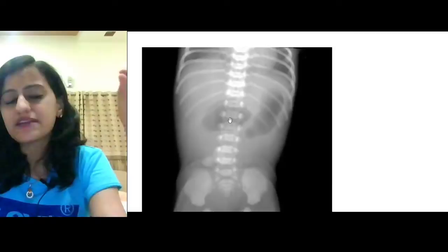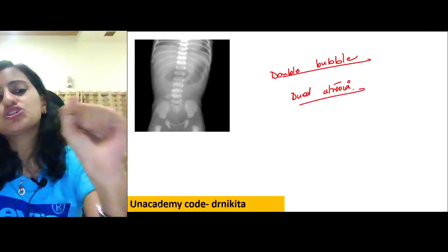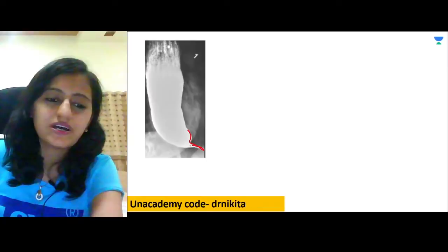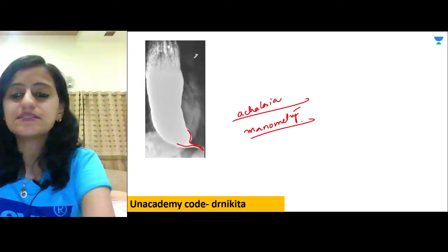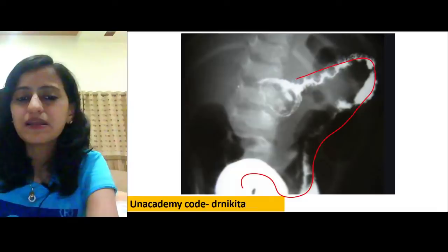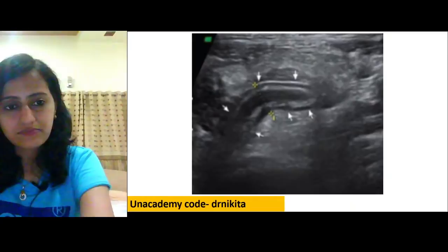Double bubble appearance on abdominal X-ray — only two bubbles — is duodenal atresia. Bird beak appearance on barium study is achalasia; gold standard investigation is manometry. Barium enema showing a claw sign — as seen in NEET PG 2022 — is intussusception; first management is hydrostatic or pneumatic reduction.